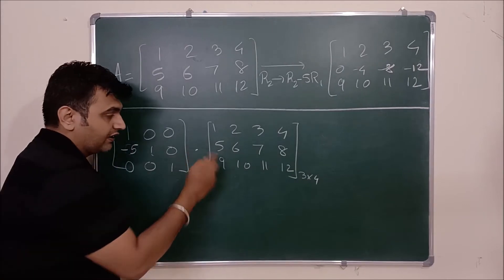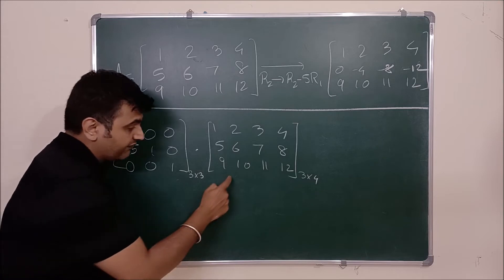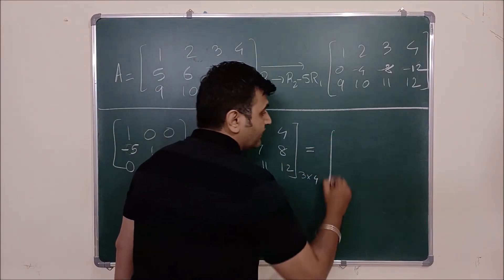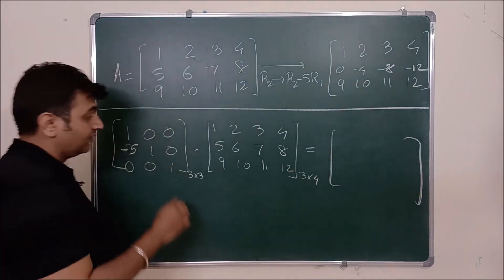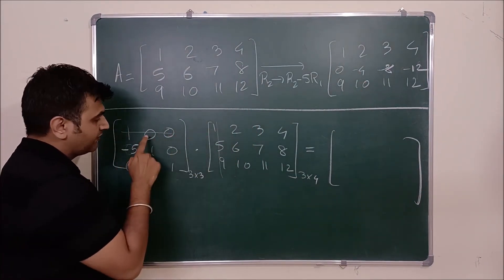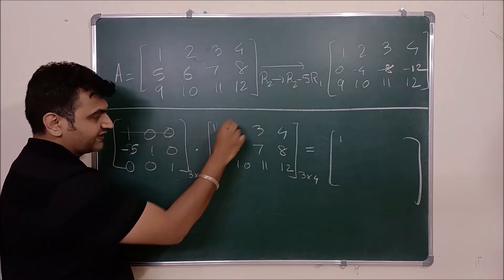So you multiply your given matrix, pre-multiply I would say, you pre-multiply your given matrix by this matrix. And if you observe, you will get the same answer. What is the first entry? First row into first column. 1 into 1 plus 0 into 5 plus 0 into 9. 1 into 1. First row, second column.